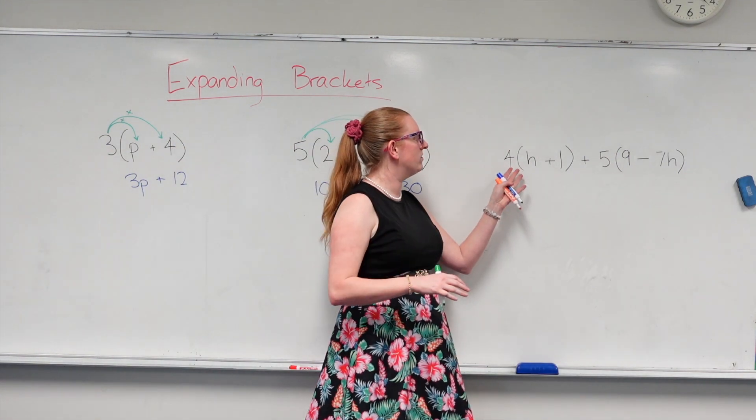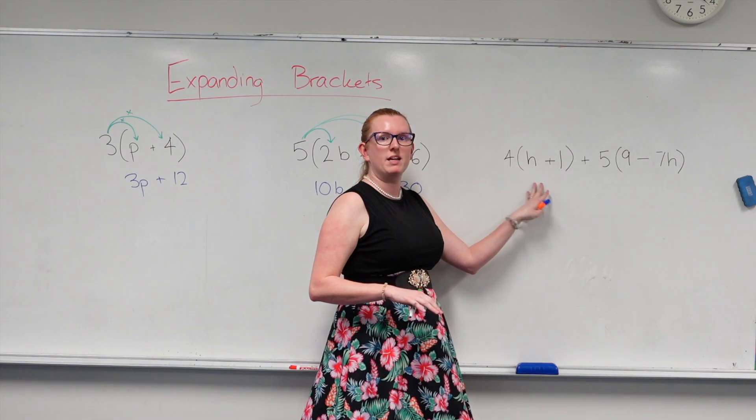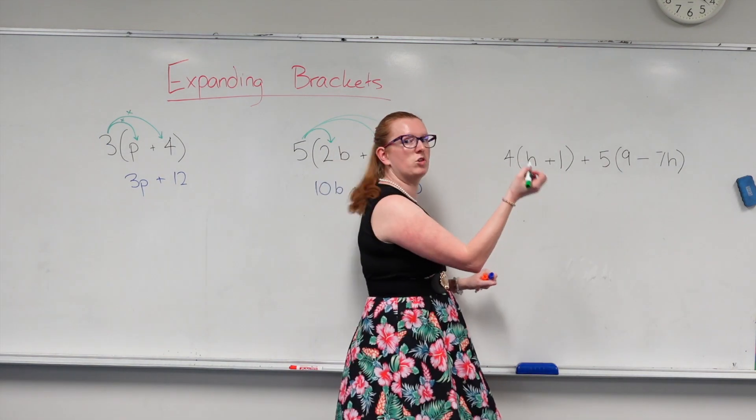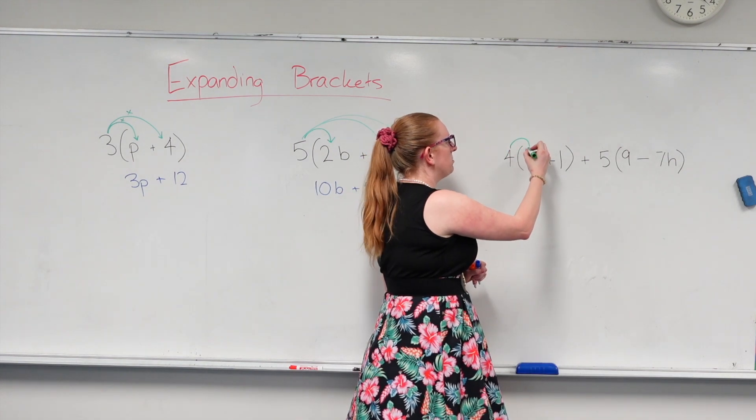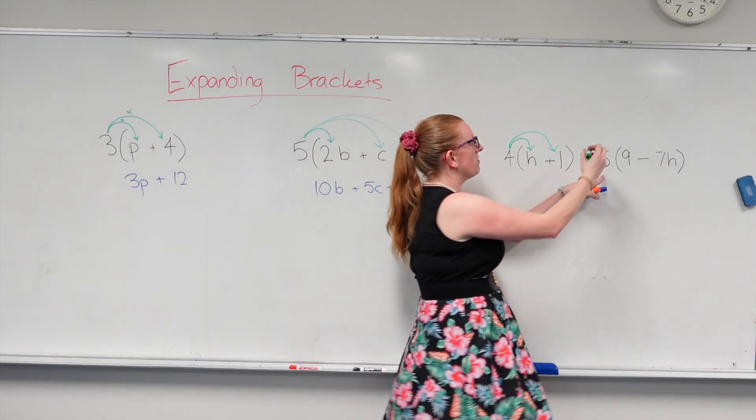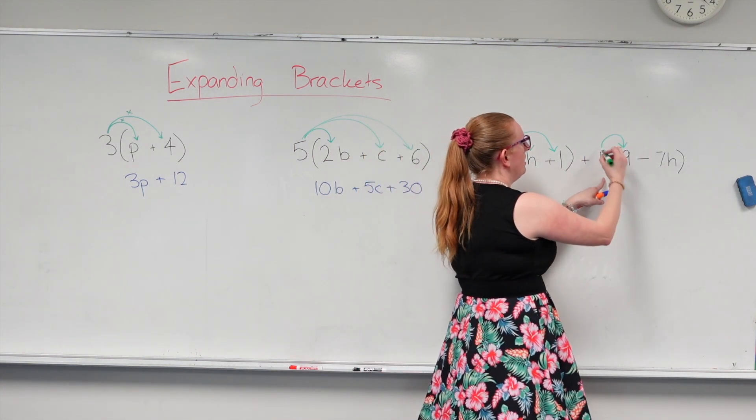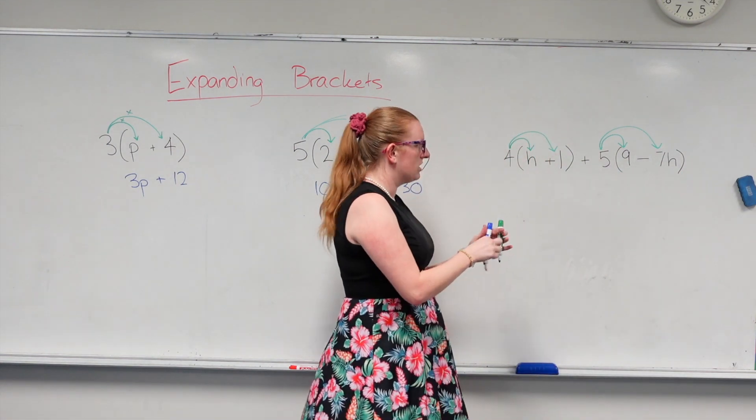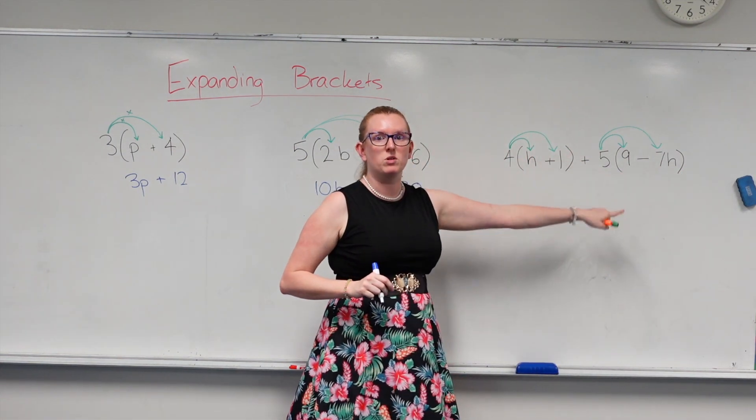And then lastly, I have a number up against the brackets and another number up against the set of brackets. So I'm going to draw my arrows. So this 4 is multiplying with the h and this 4 is multiplying with the 1. And then over here, I've got a 5 that's multiplying with the 9 and a 5 that's multiplying with the negative 7h. So I'm going to be doing four separate lots of multiplication.